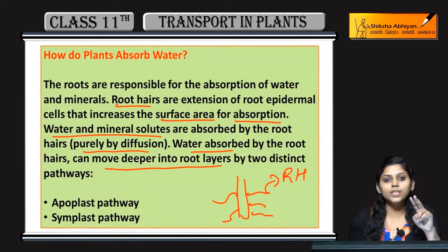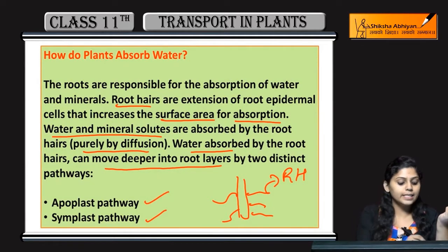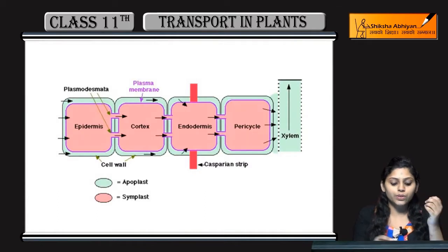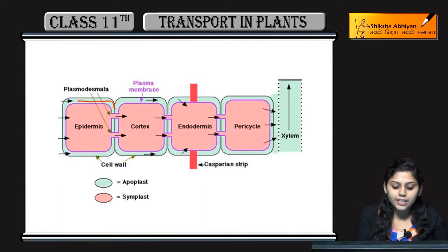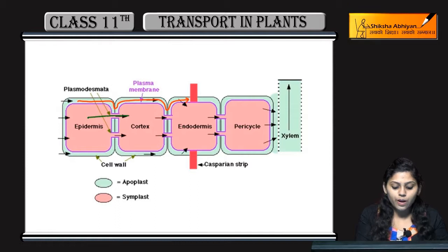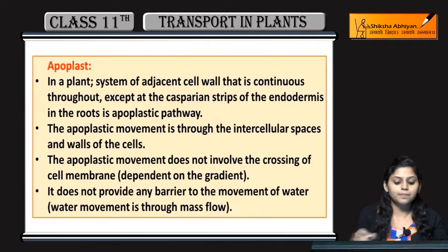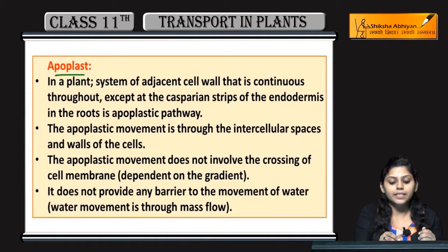Do distinct pathways hain iske liye — apoplast pathway and symplast pathway. You can see yeh jo adjacent cell walls ki through pathway ja raha hai yeh hai apoplast pathway, aur yeh jo plasmodesmata se hote hue cell to cell jata hai yeh hai symplast pathway.